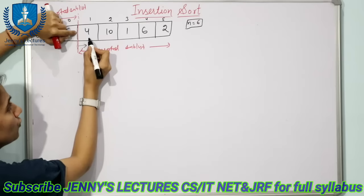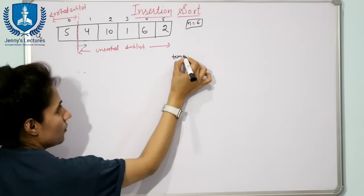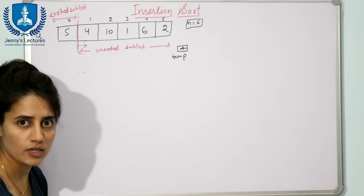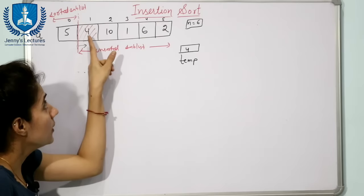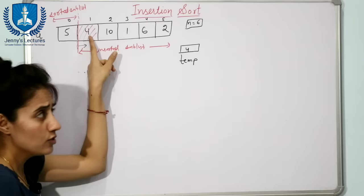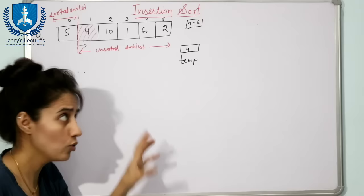First, take the value 4. When we take this value, it is stored in a variable — suppose 'temp'. We store the value 4 in the temp variable. Now we have a backup of this value, so we can overwrite the position in the array. That position is now considered free space — we can overwrite it.